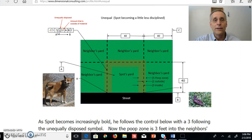Still five feet wide, unequally disposed, but in this case two feet outside of Spot's yard, outside material, two feet into the neighbor's yard, and then the rest of the three feet, it'll still be in Spot's yard.